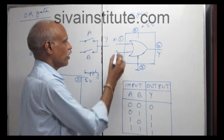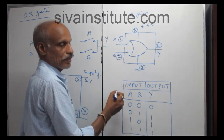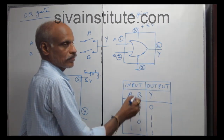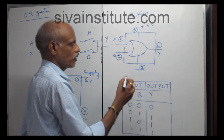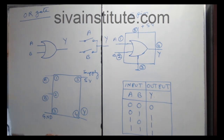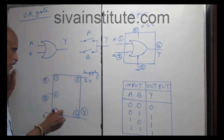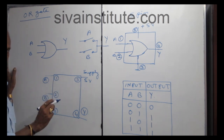Pin number 1, 2 — A, B input. Pin number 4 — Y output. Pin 5 is supply, pin 3 is ground. In physical appearance, this is 5 pins, single gate — this is single R-Gate.